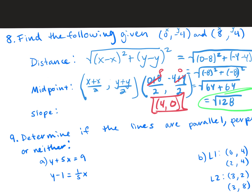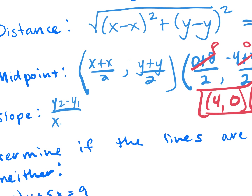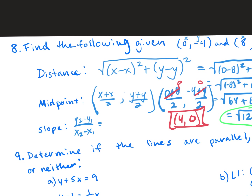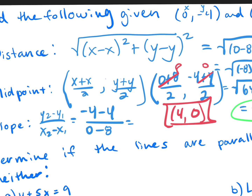Lastly, slope. The slope formula is y2 minus y1 over x2 minus x1. You've got to keep your y's together and your x's together. Whichever y you use as your y2, you need to use the same corresponding x. So if I say negative 4 minus 4, I need to start with 0 in the denominator — so 0 minus 8. Negative 4 minus 4 gives me negative 8, divided by 0 minus 8, which is negative 8. My slope is positive 1. In order for your signs to be correct, whichever y value you start with in the numerator, you have to start with the corresponding x value in the denominator.